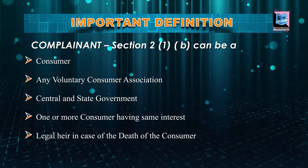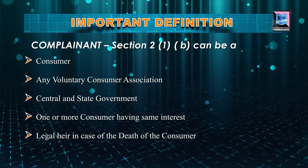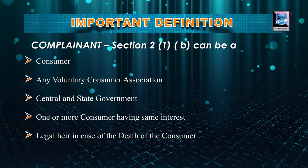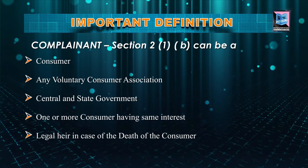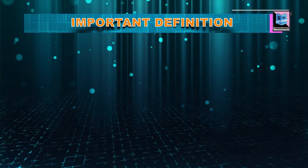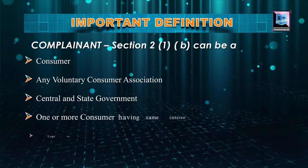One, a consumer can file a complaint. Two, any voluntary association registered under Companies Act 2013. Three, a state government and central government can file a consumer complaint. Four, one or more consumers having the same interest — for example, a group of persons who have used a product with the same defect and have the same cause, same interest, or same amount of compensation — 10 or 15 persons asking together can file a consumer complaint before the consumer forum. Five, the legal heir — in case of the death of the person, the legal heir can file a consumer complaint.